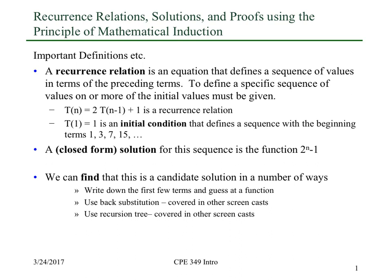A recurrence relation is an equation that defines a sequence of values in terms of preceding terms. The best way to think about this is with a simple example. The nth term of the sequence is 2 times the n minus first term, the previous term, plus 1.